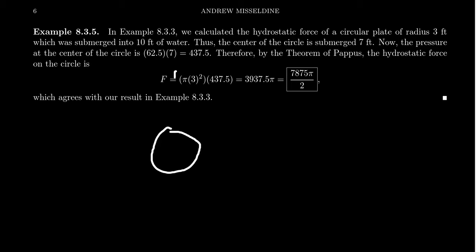The center of this circle was submerged 10 feet and it had a radius of 3. This means that the depth at the centroid, the center of the circle, is 7 feet. So if you take the pressure at the centroid, that's 62.5 times 7, the center right there, which is 437.5 pounds per square foot.